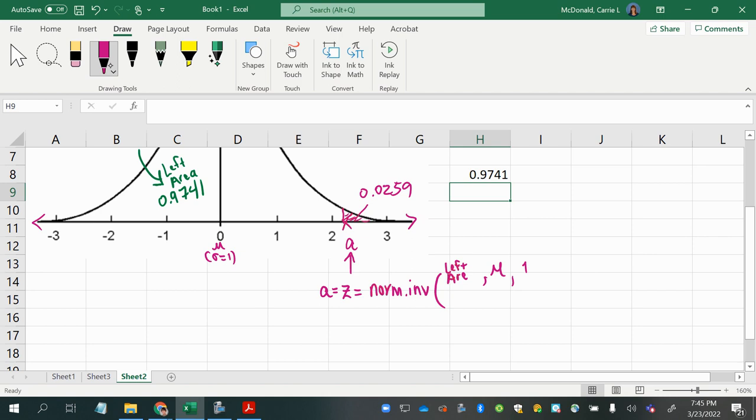Now the mean and the standard deviation are 0 and 1 because we're dealing with Z scores. So that's not always the case if you're looking for a boundary. Sometimes if it's a non-standard normal distribution with a different mean and a different standard deviation, you just want to make sure to input those correctly. And now we want to put in the left area that we found by subtracting from 1, so 0.9741.